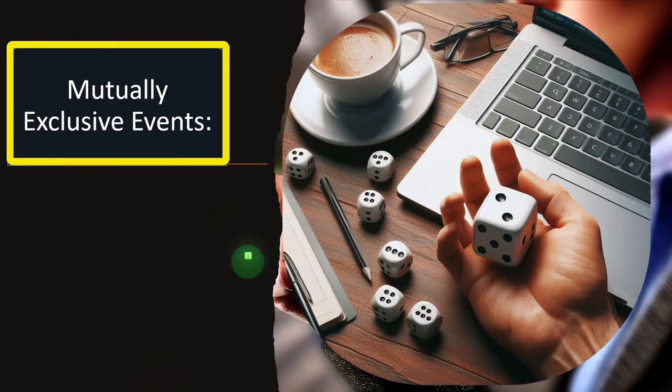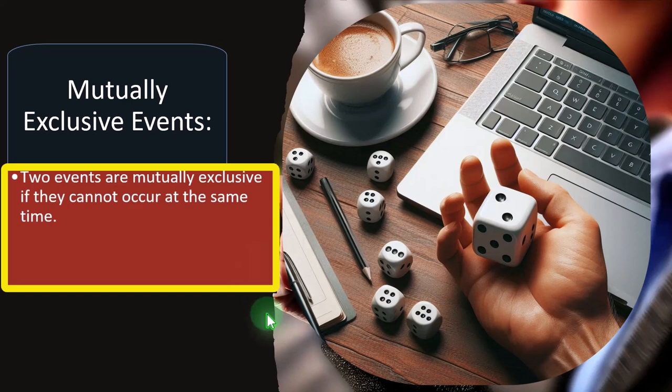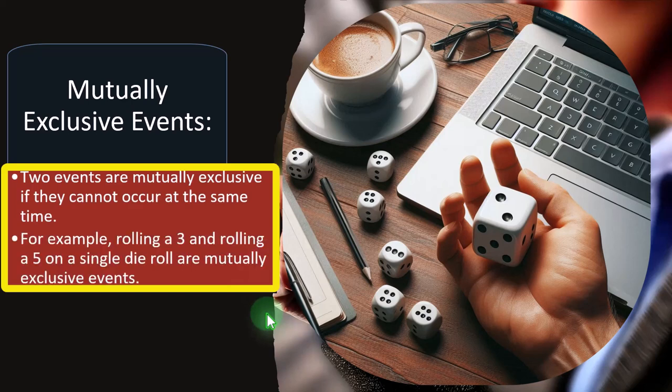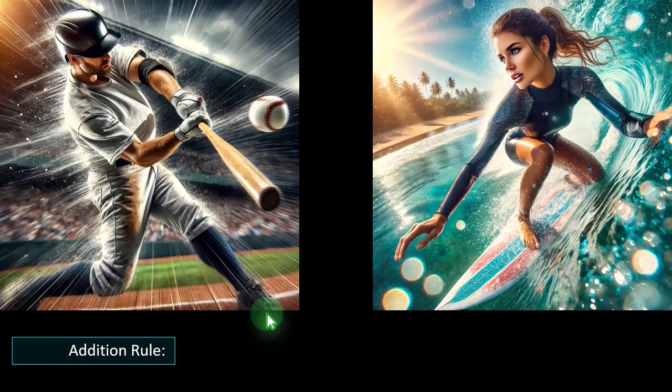Mutually exclusive events: two events are mutually exclusive if they cannot occur at the same time. For example, rolling a three and rolling a five on a single die roll are mutually exclusive. You can't roll one die and get both a three and a five. You can't flip one coin and get both heads and tails — those are mutually exclusive events by definition.